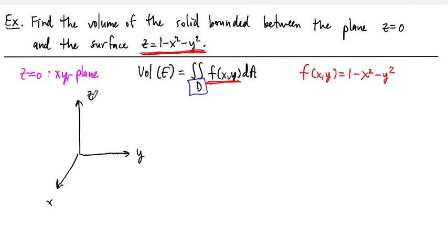So here's our x, y, z coordinates. And we hopefully remember from previous lectures that this shape, z equals 1 minus x squared minus y squared, is a paraboloid.